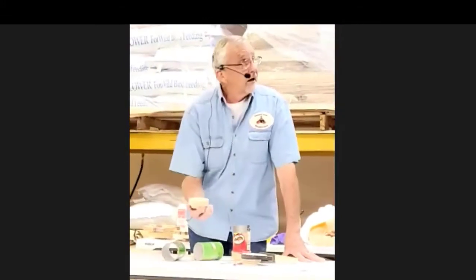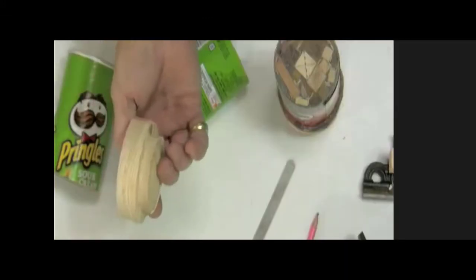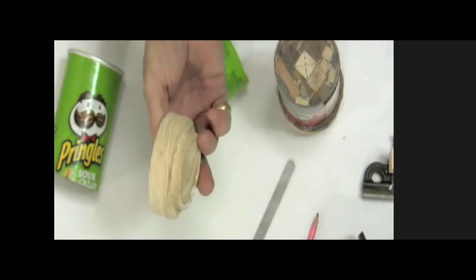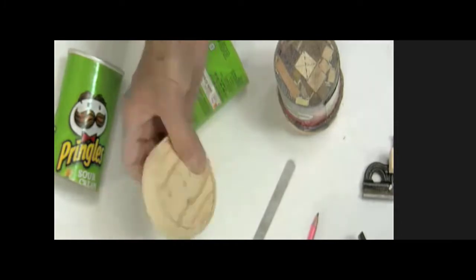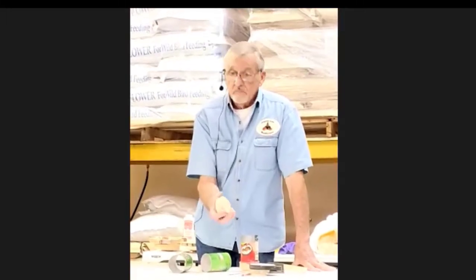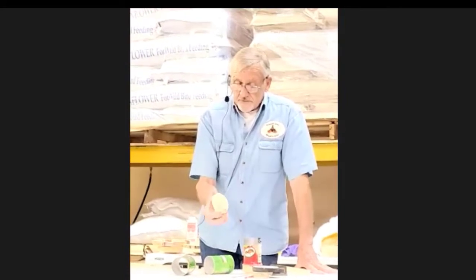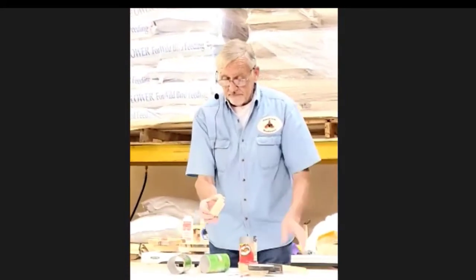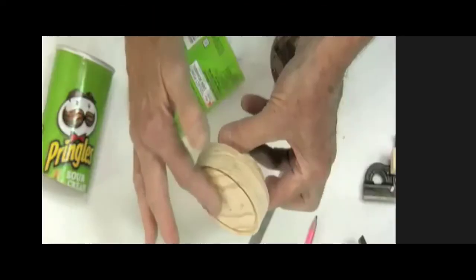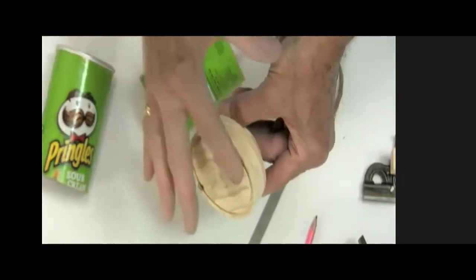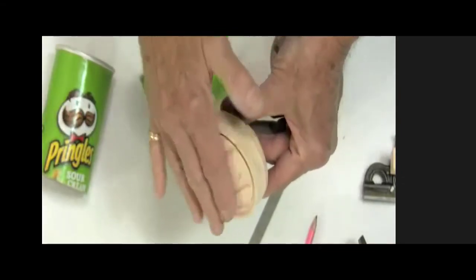First thing I start with is a piece of scrap wood. I start out with a piece of two by four. I turn a tenon on the back side, halfway round it off. Make sure the base of it is flat. I'll explain that in a minute.